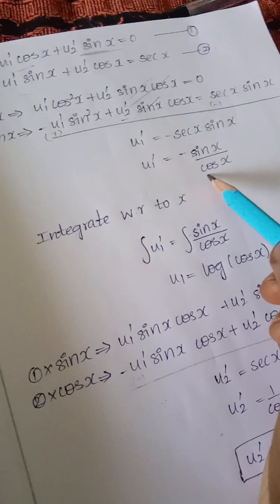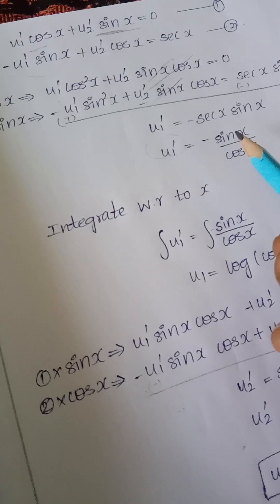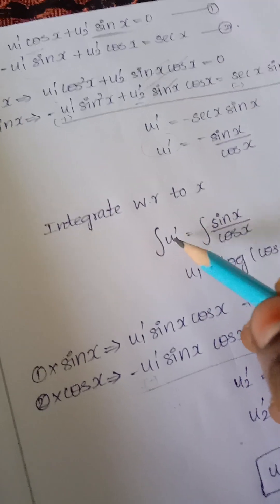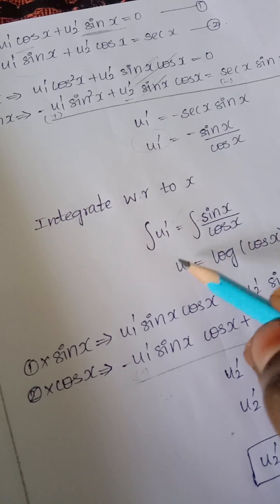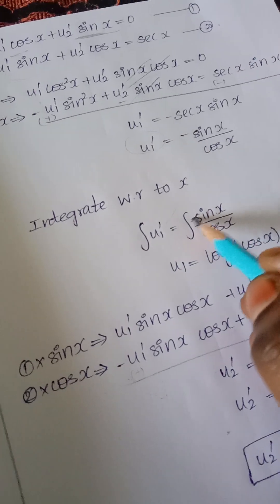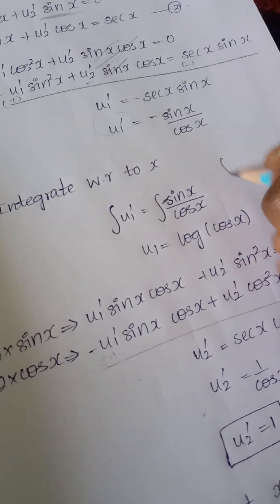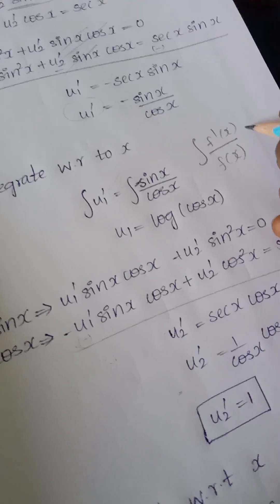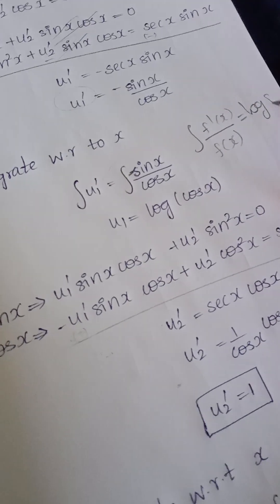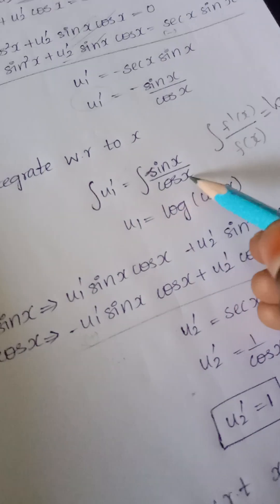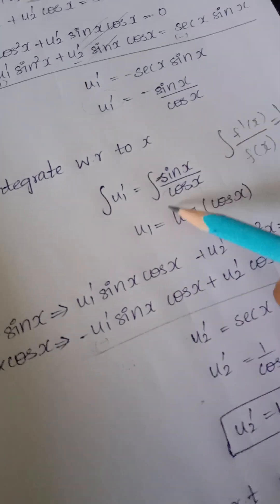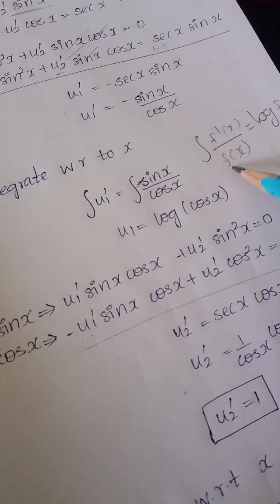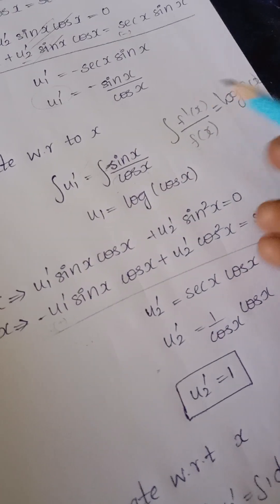We need u₁, not u₁', so we integrate: u₁ = ∫(−sin(x)/cos(x))dx. This is in the standard form ∫f'(x)/f(x) dx = log|f(x)|. Since differentiating cos(x) gives −sin(x), we have u₁ = log|cos(x)|.